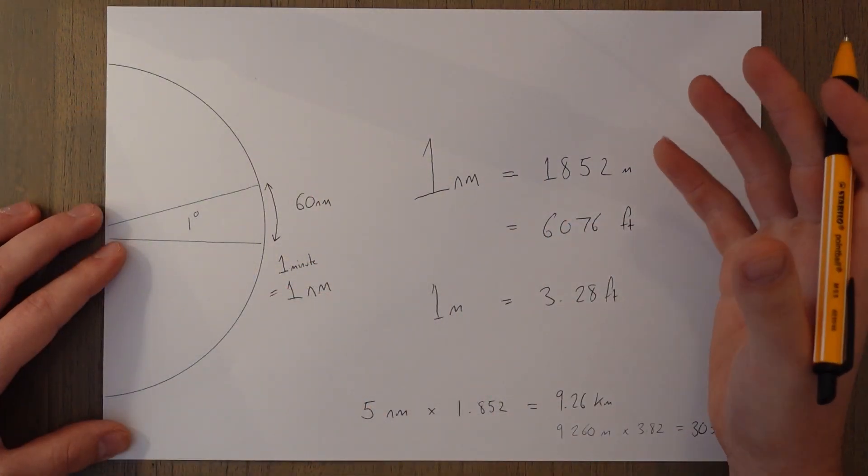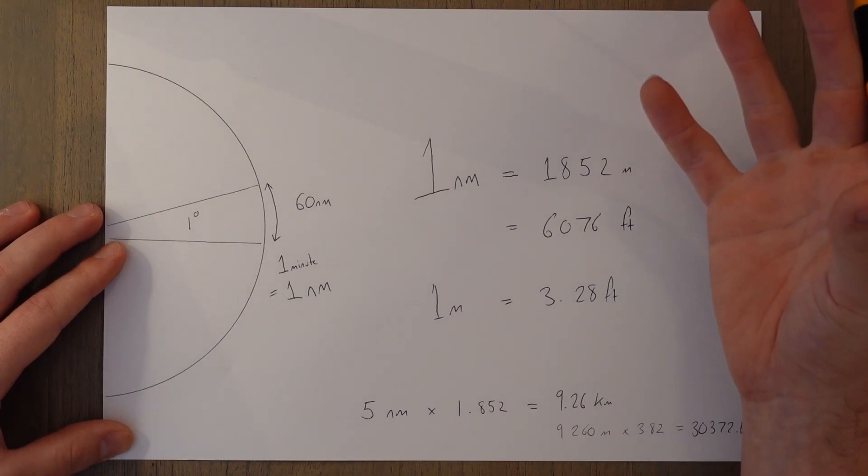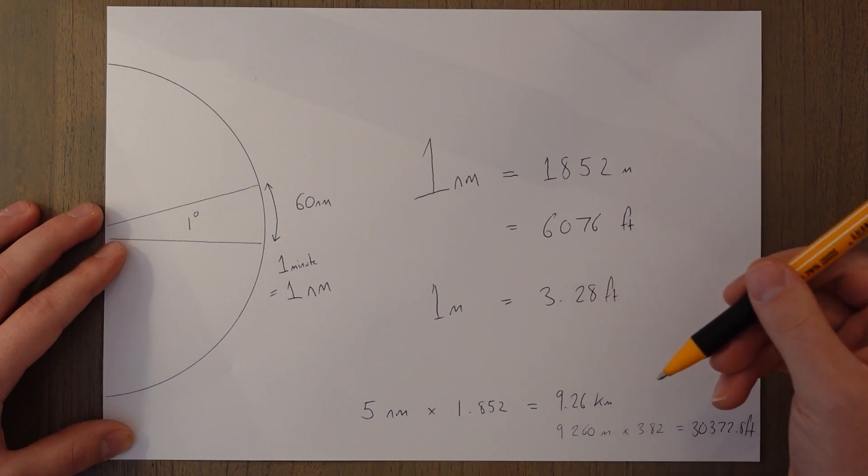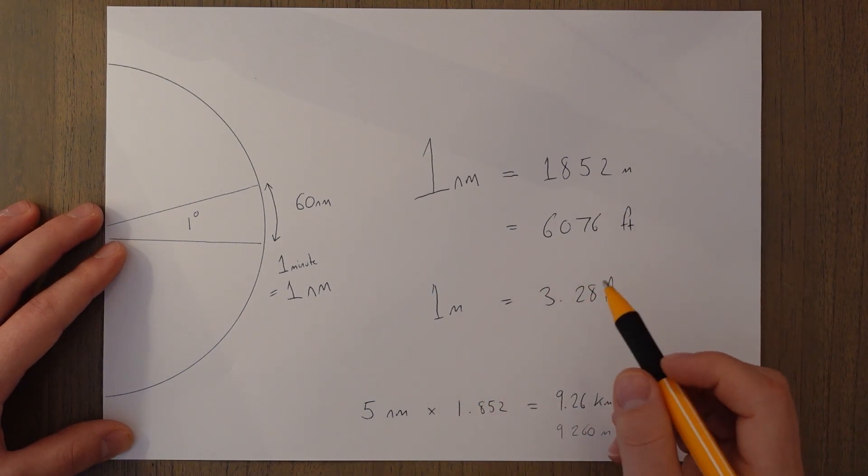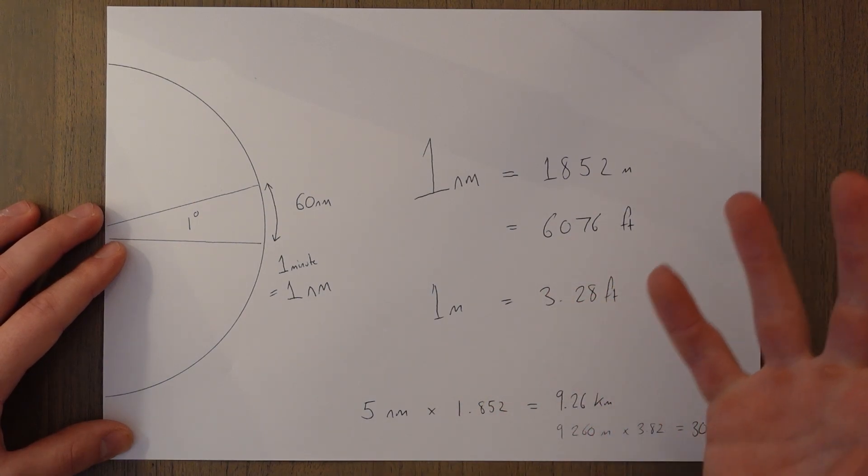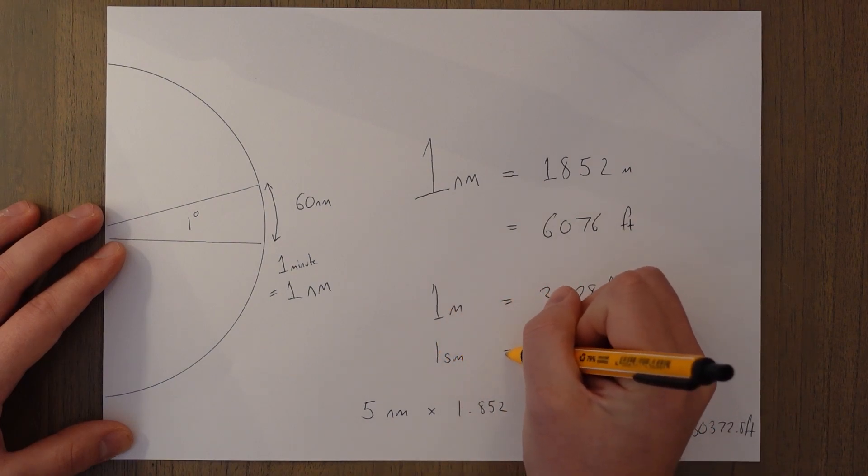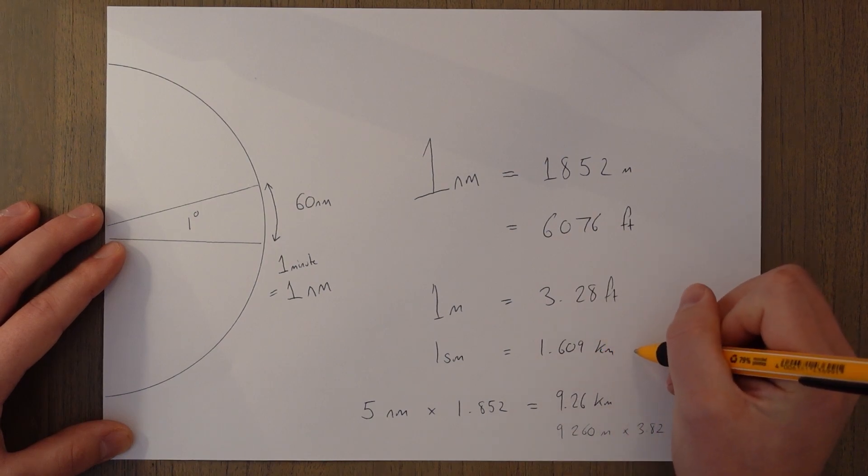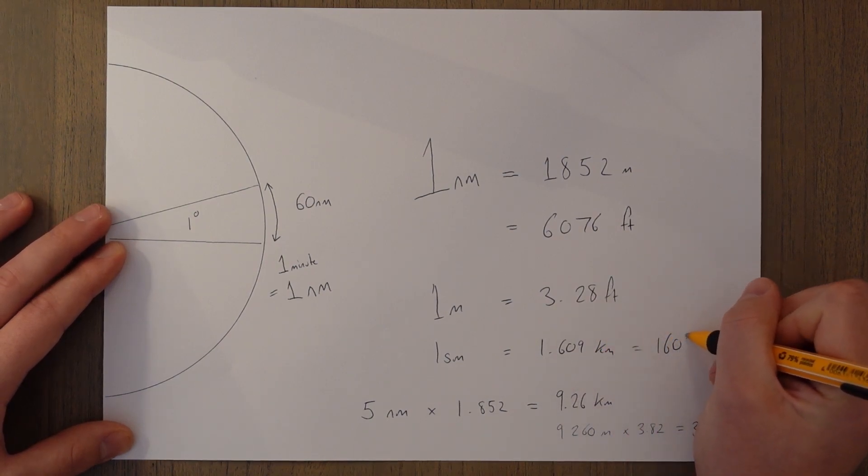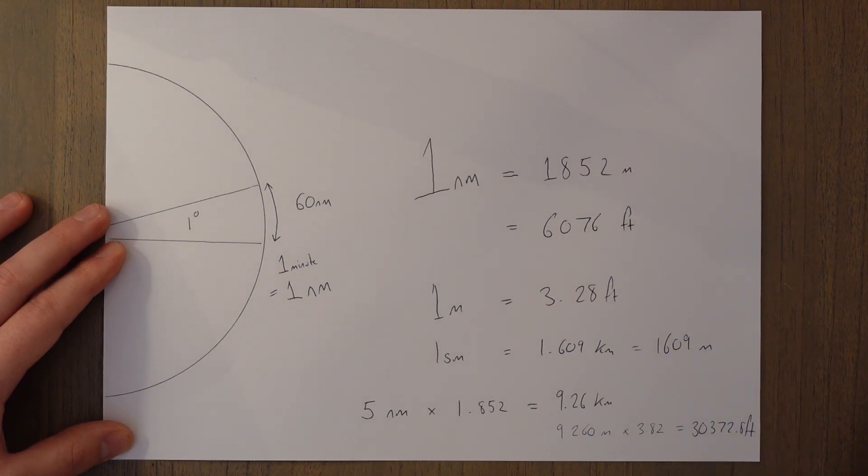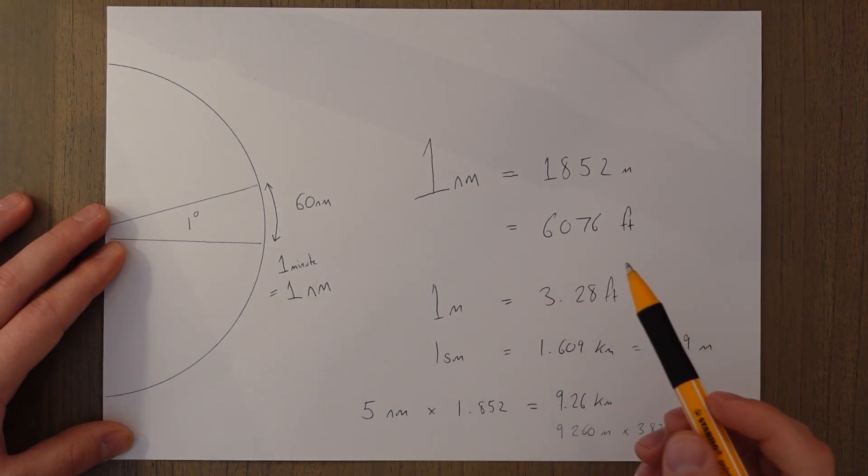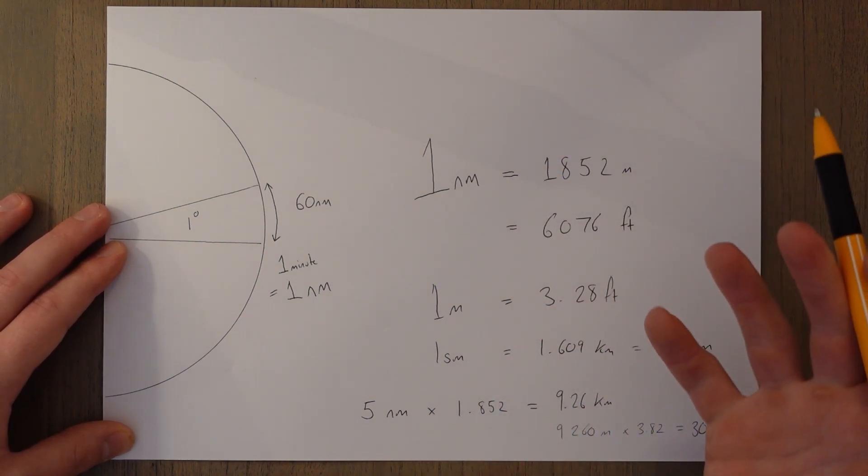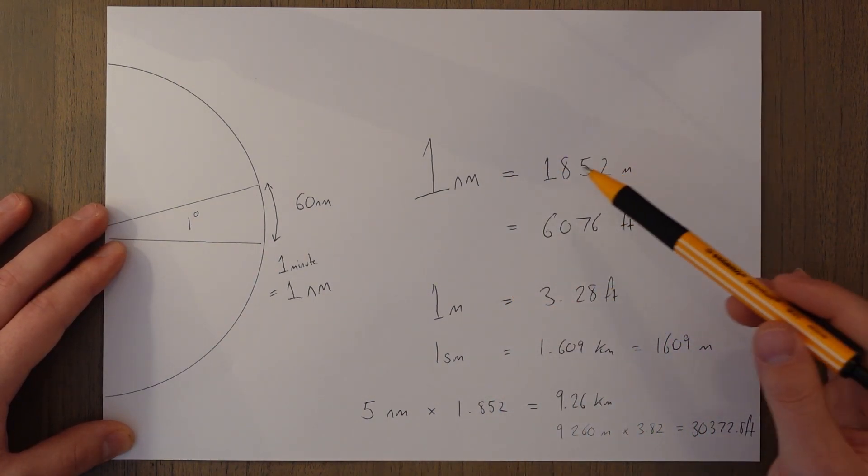So occasionally in the states, like the United States, I think they also use the statute mile for distance. And if you need to, then the conversion for that that is good to remember is one statute mile equals 1.609 kilometers or 1,609 meters. You could also remember that there's a conversion between nautical miles and statute miles.